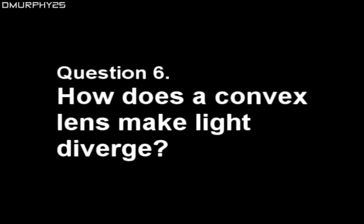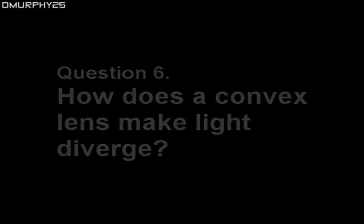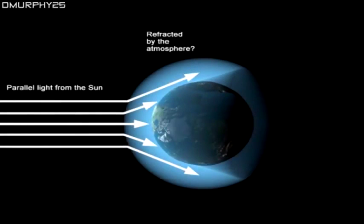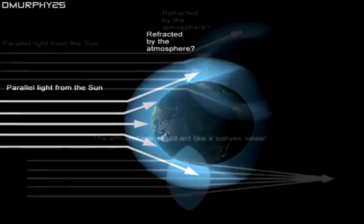Question 6. In a similar vein, how does a convex lens make light diverge? So again, the official explanation for diverging sun rays is that the Earth's atmosphere refracts the Sun's light like a lens.